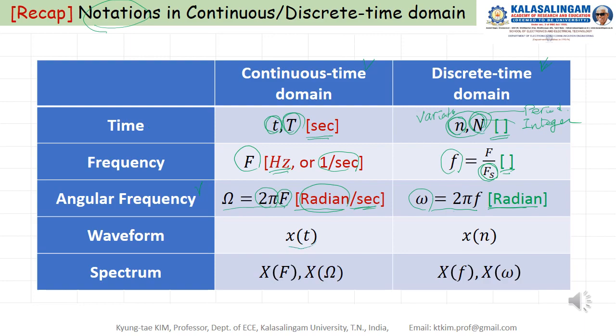Waveform, X of T, X of N, this is lowercase. Therefore, usually we can represent the waveform with lowercase. And spectrum, we usually represent uppercase like this. X of F, omega, X of F, like this.